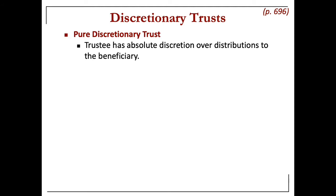There are some protections for the beneficiary in this case, but it's going to be harder to show that a trustee breached his obligation to distribute in cases where there's a pure discretionary trust, because the trustee has the most power.